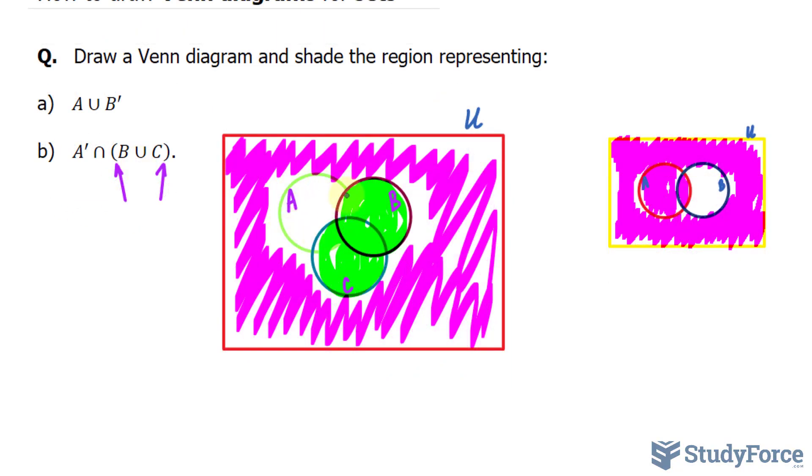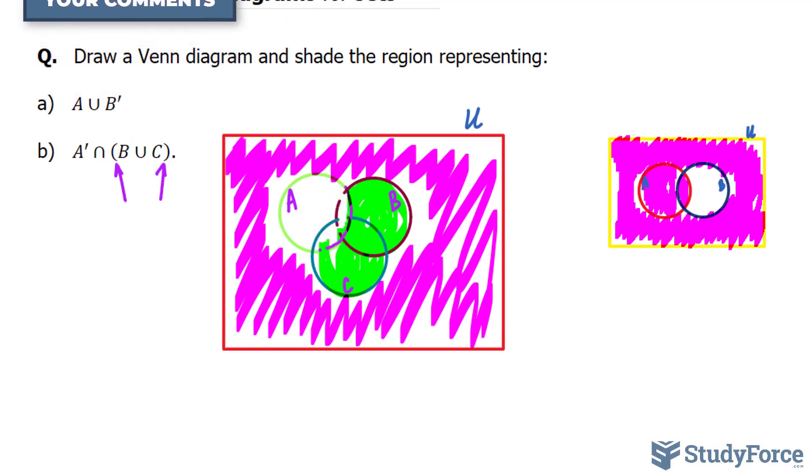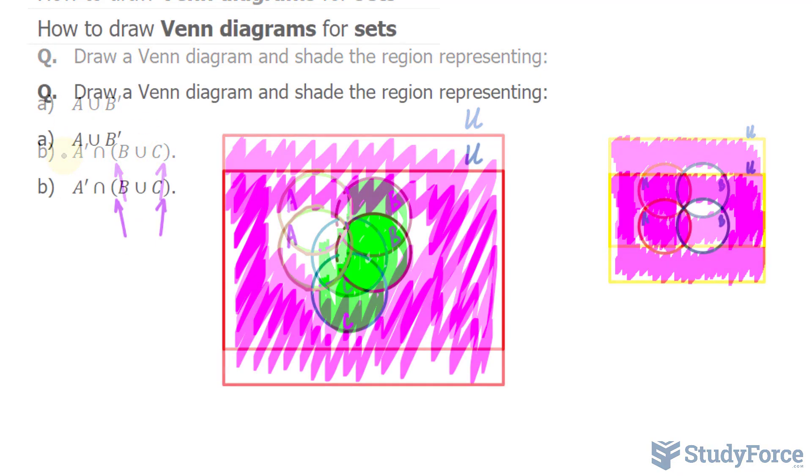With that being said, since A is empty, given that it's the complement of A, we cannot include this part of the Venn diagram. So notice that I'm erasing the shaded region here and I'm making sure that A is completely empty. Because that's what's shared between the union of these two sets and the complement of A. And there you have it.